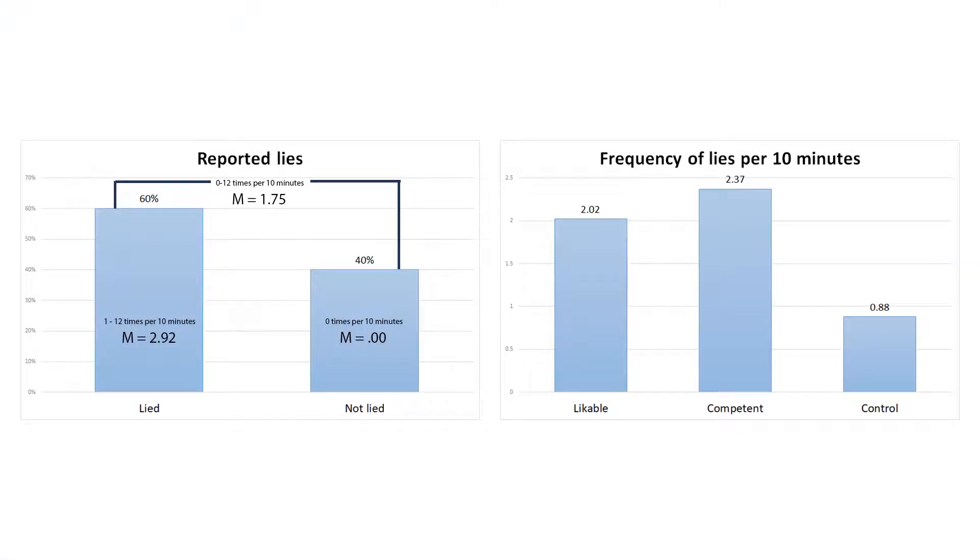On your screen you can see the results of the experiment. People lied 0-12 times per 10 minutes with an average result of 1.75 times. 40% of people haven't told any lie during a 10-minute conversation.